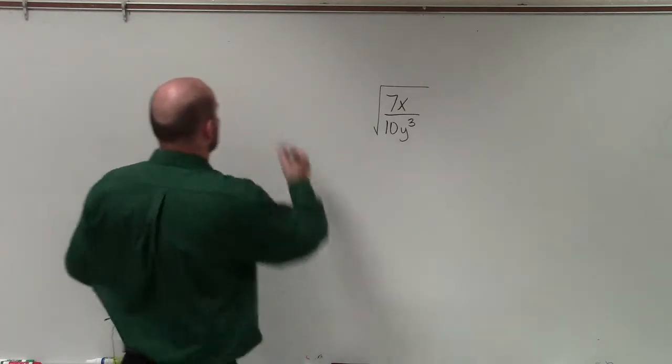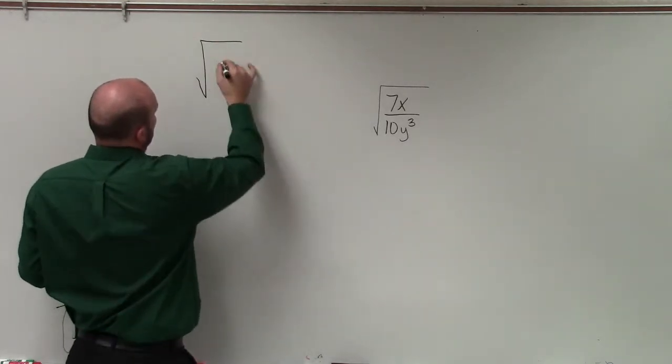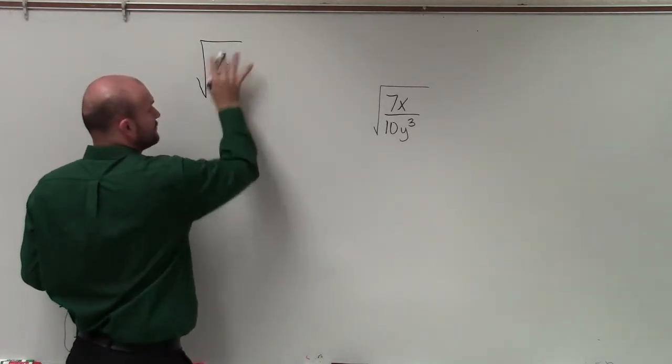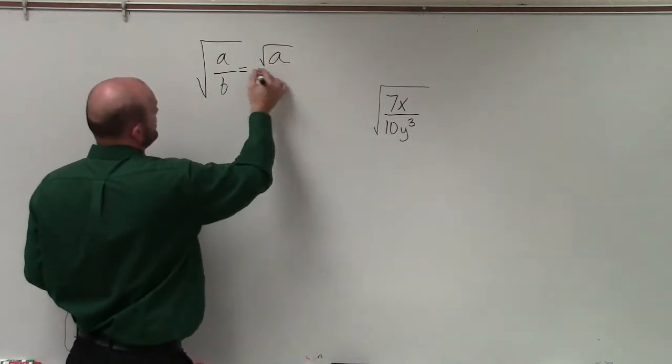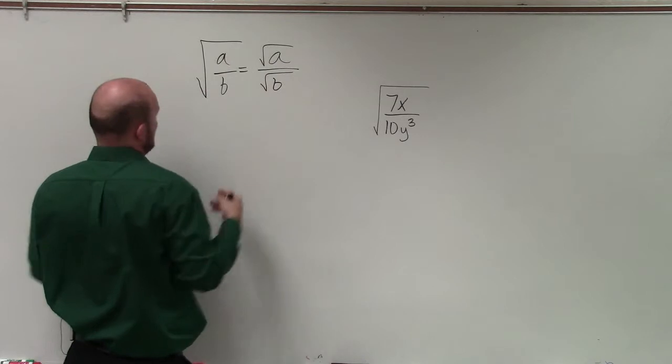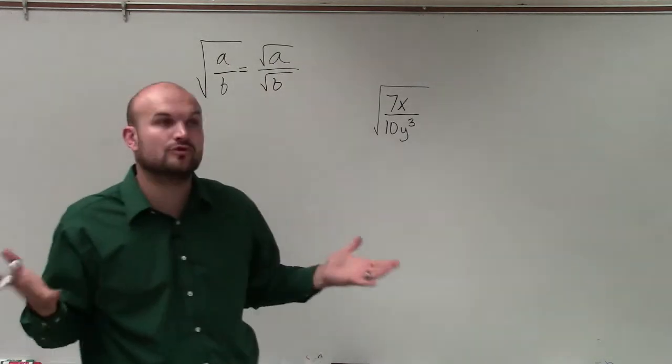Now, it is important to understand that our rules of radicals allows us that if we're taking the square root of a rational number, we can break that up into the square root of a over the square root of b. And that really goes through any power, any root that you're going to be taking.